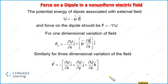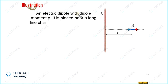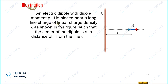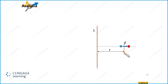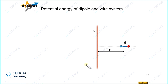In illustration number one, an electric dipole with dipole moment p is placed near a long line charge of linear charge density lambda, as shown in the figure. This is the dipole having dipole moment p-vector, and this is the infinite long wire having charge density lambda per unit length. The dipole is placed at a distance r from the wire, and we need to find the force acting on the dipole. To find the force, we need to find the potential energy of the dipole associated with the electric field of the long wire. The potential energy of the dipole and wire system is given by U = −p·E.